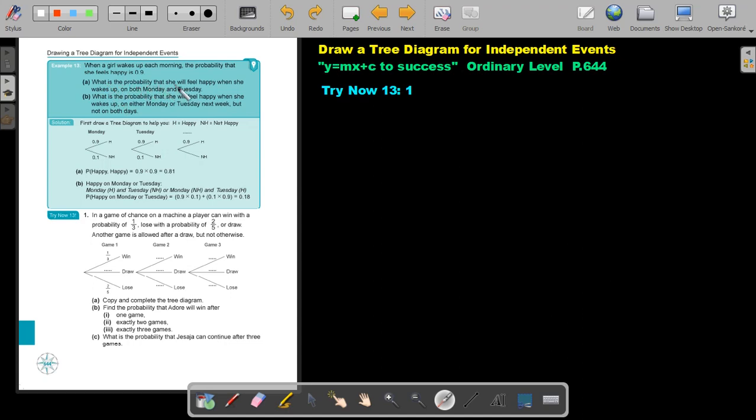What is the probability that she will feel happy when she wakes up on both Monday and Tuesday? What will be that road? Let's just mark that road. Happy, happy. What do we do in a branch? We are going to multiply. It's going to be 0.9 multiply 0.9, and that will give us 0.81.